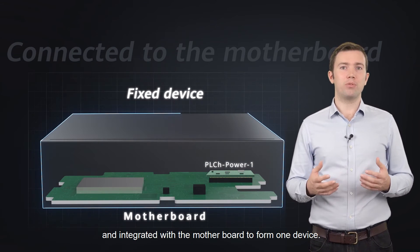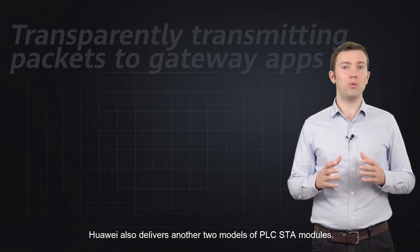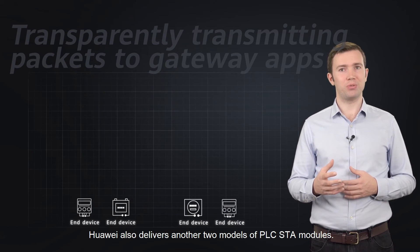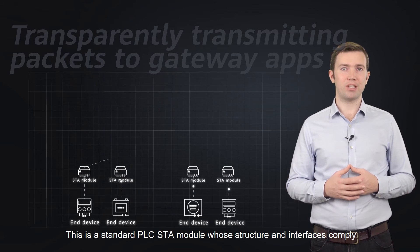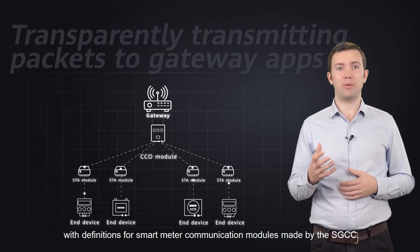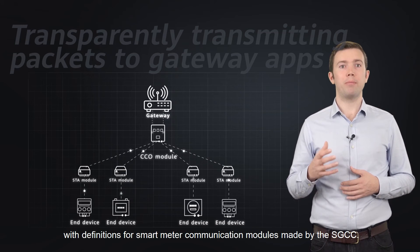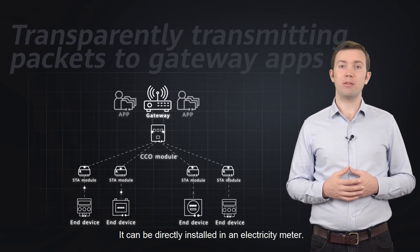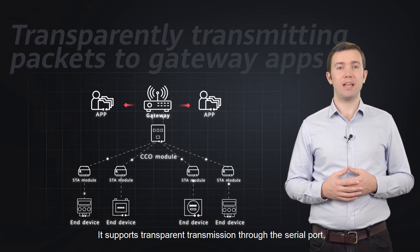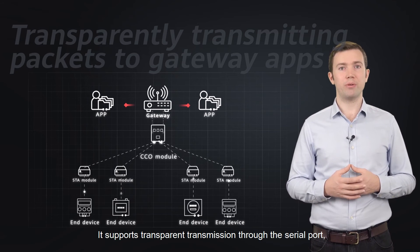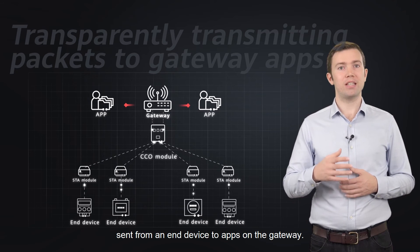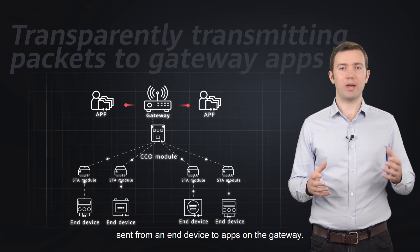Huawei also delivers two models of PLC star modules. This is a standard PLC star module, whose structure and interfaces comply with the definitions for smart meter communication modules made by the SGCC. It can be directly installed in an electricity meter. It supports transparent transmission through the serial port, which means it can transparently transmit packets sent from an N device to apps on the gateway.